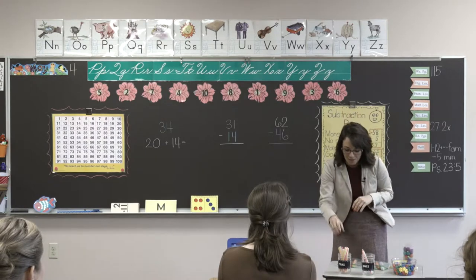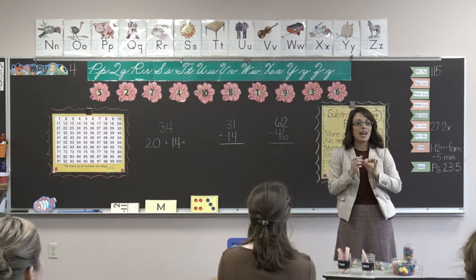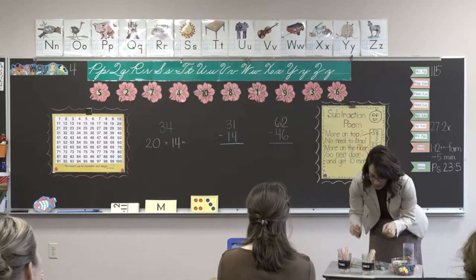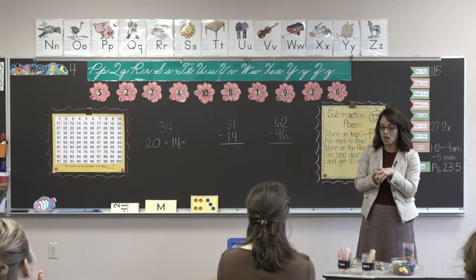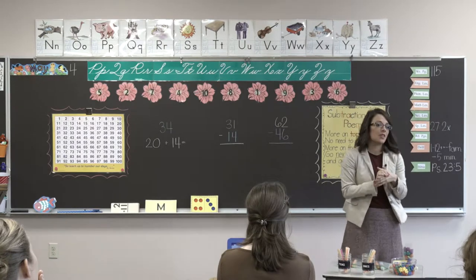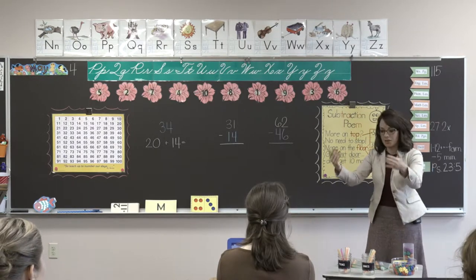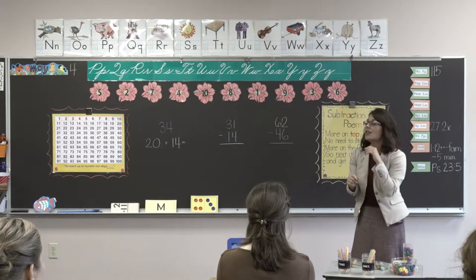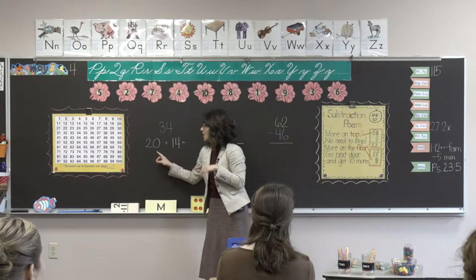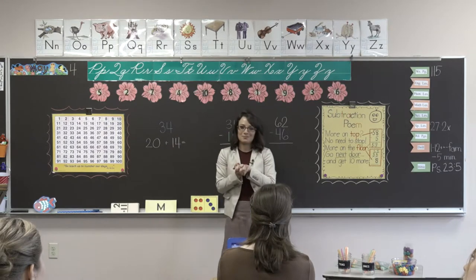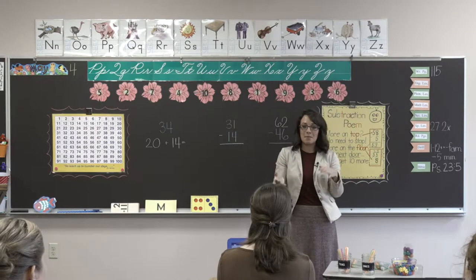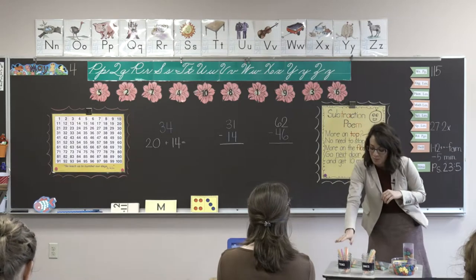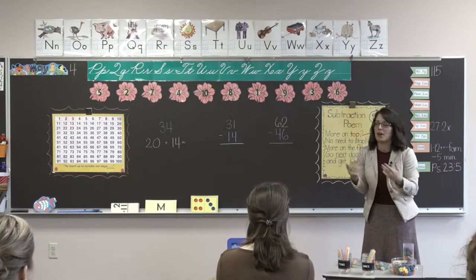Then I ask, 'What would happen if I took a bundle from the tens place and moved it over to the ones place?' I'm questioning them: 'Do I still have the same number?' I would have another student come up and count: 10, 20, and then individually 21 all the way to 34. Then I'd write on the board 20 plus 14 — what does it equal? 34, right? It's still the same number. You're teaching them that just because you've moved something from one place to another, you're still working with the same number.